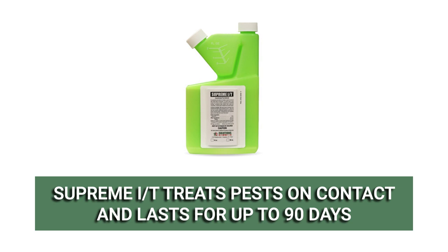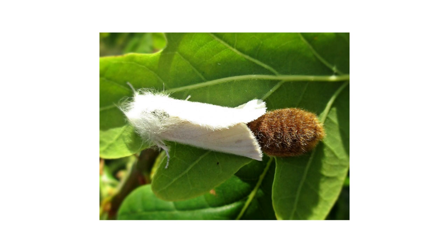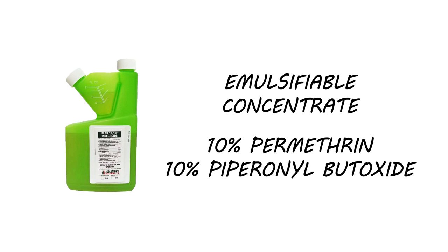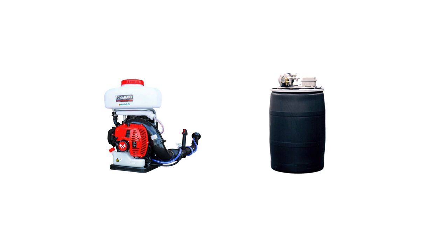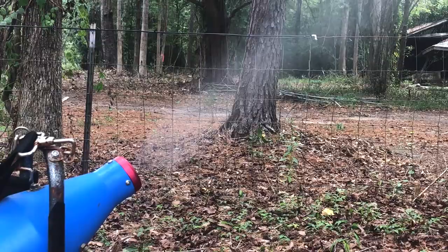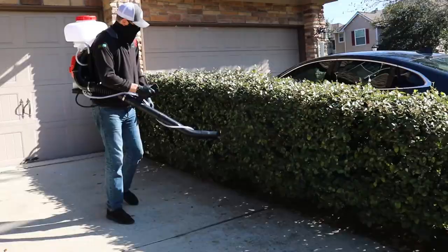To get rid of adult moths, you'll need to make a space spray application with a fogging insecticide like Flex 1010. Flex 1010 is an emulsifiable concentrate that contains 10% permethrin and 10% piperonyl butoxide, a synergist. We recommend you apply this product with a ULV fogger or a mosquito misting system with a 0.09% emulsion of this product to treat every 1,000 cubic feet of space. To achieve that concentration, you can mix 64 fluid ounces of product into 55 gallons of water. Once you've mixed your solution, apply it as a fog or mist in the desired treatment spaces. When applying to foliage, be sure to cover over and underneath the leaves. This application will treat flying pests that make contact with the mist.